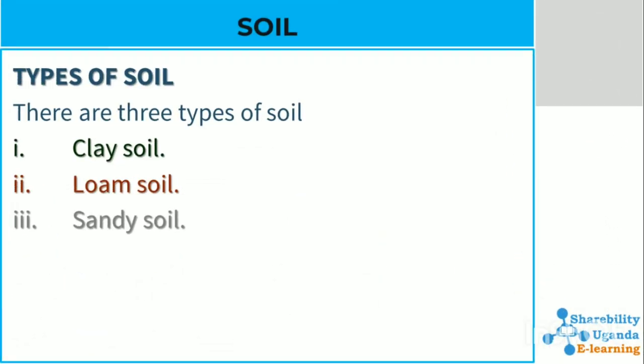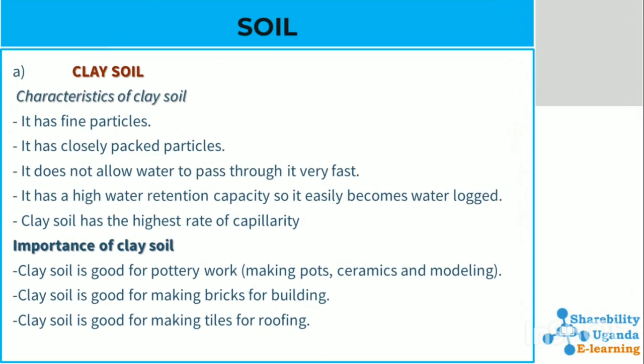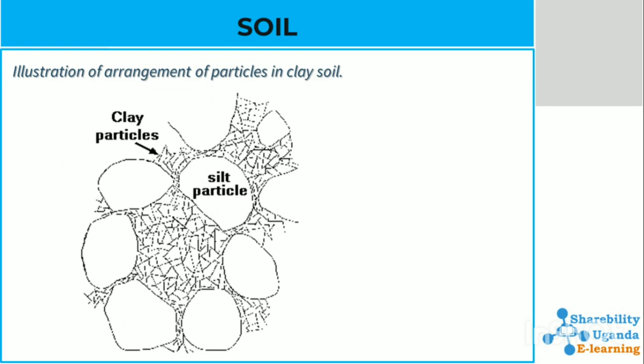Types of soil include clay soil, loam soil, and sand soil. Clay soil has fine particles and its particles are closely packed. It does not allow water to pass through it very fast and has a higher water retention capacity. Clay soil has the highest rate of capillarity. Its importances include: it's good for pottery work, good for making bricks, and good for making tiles for roofing. In the diagram below we have an illustration of clay soil particles.